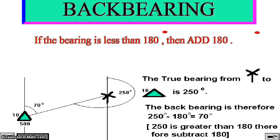In order to calculate the back bearing, if the bearing is less than 180 degrees, then add 180 degrees. For example, 20 degrees is less than 180 degrees. Therefore, the back bearing of 20 degrees will be 20 degrees plus 180 degrees, which is equal to 200 degrees.